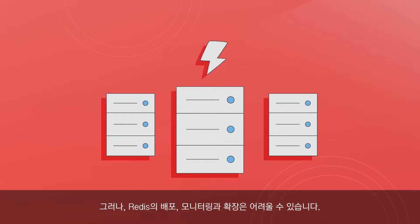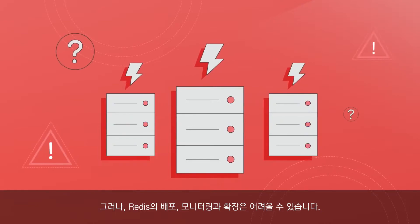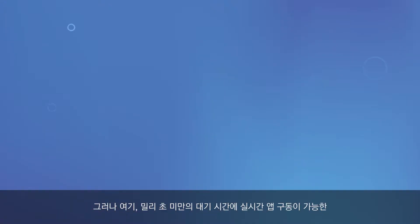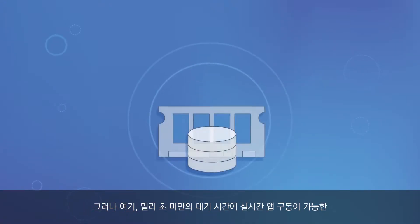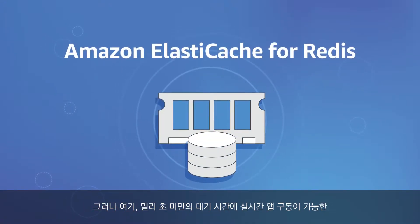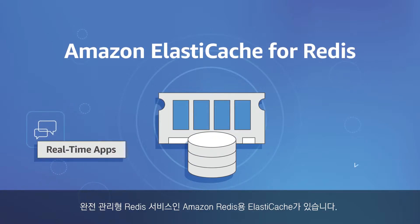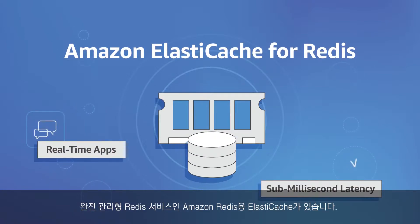But deploying, monitoring, and scaling Redis can be challenging. Presenting Amazon ElastiCache for Redis — a fully managed Redis service to power real-time applications with sub-millisecond latency.